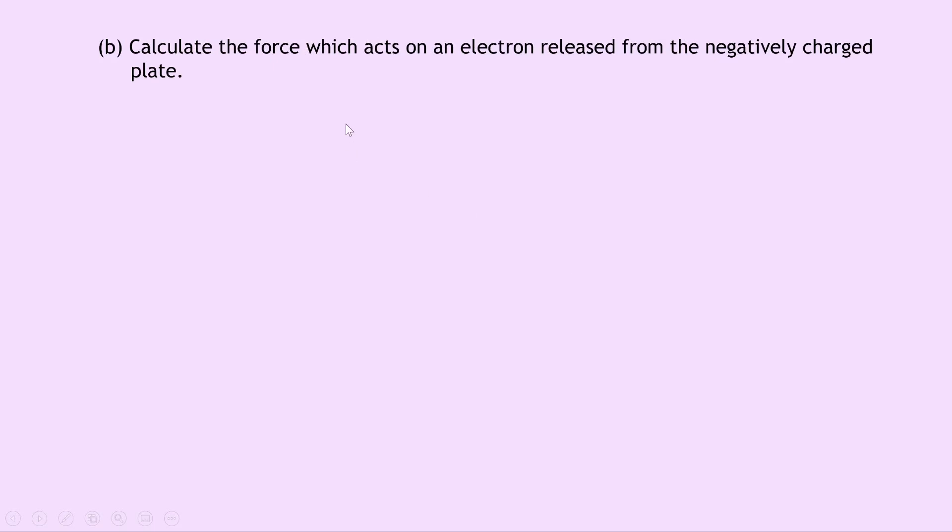Part B says to calculate the force which acts on an electron released from the negatively charged plate. Well, the force will be due to the electric field, so we can use our equation relating force F and electric field strength E. So writing down what we know from the question, we're trying to find F. We know that Q is 1.6 times 10 to the minus 19 coulombs for an electron, and the electric field strength is something we also don't know. But we do know the potential difference of 5,000 volts, and the distance D between the plates of 10 centimetres or 0.1 metres.